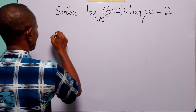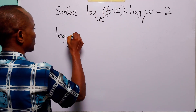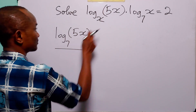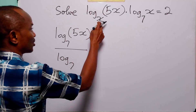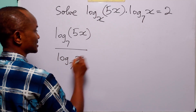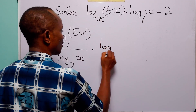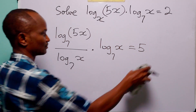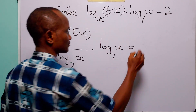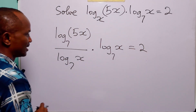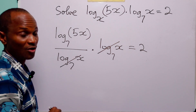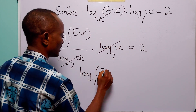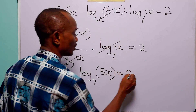Changing to base 7, we have log base 7 of 5x over log base 7 of x, multiplied by log base 7 of x, and this is still equal to 2. You can see that the log base 7 of x cancels, leaving us with log base 7 of 5x equals 2.